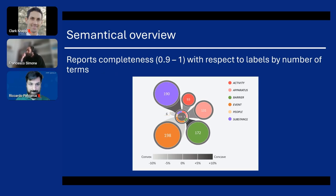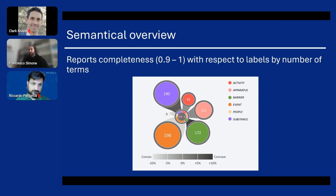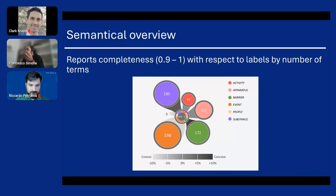Another visualization we built was about a temporal overview — a temporal analysis of the trend of completeness by industrial sector. On this plot we can see the number of reports grouped by the date of collection and the average completeness they can guarantee in the description of the near-miss event. The point on the plot moves year by year by industrial sector. For example, the orange industrial sector is going up in terms of completeness but also lowering the number of near-miss reports. We also created a custom visualization we call a flower plot, which was meant to analyze the semantics — the terms that were used and tagged in the ontology — and how much they are present in the complete near-miss reports.